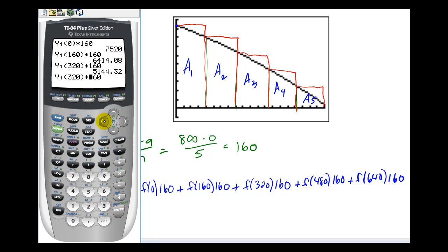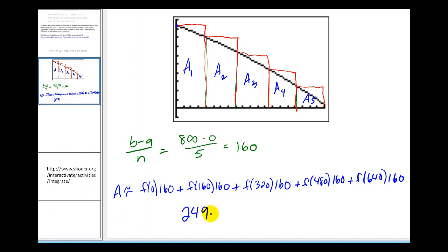The next will be y of 480 times 160. And the last one, f of 640 times 160. And now I need to add all five of those areas up. I've already done that, and it comes out to 24,902.4.